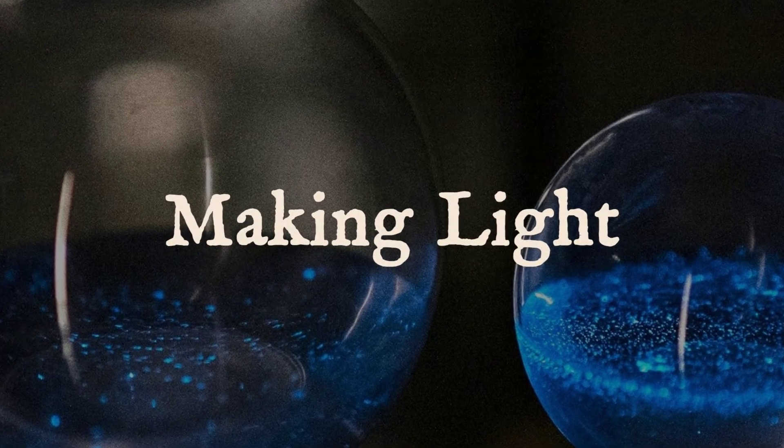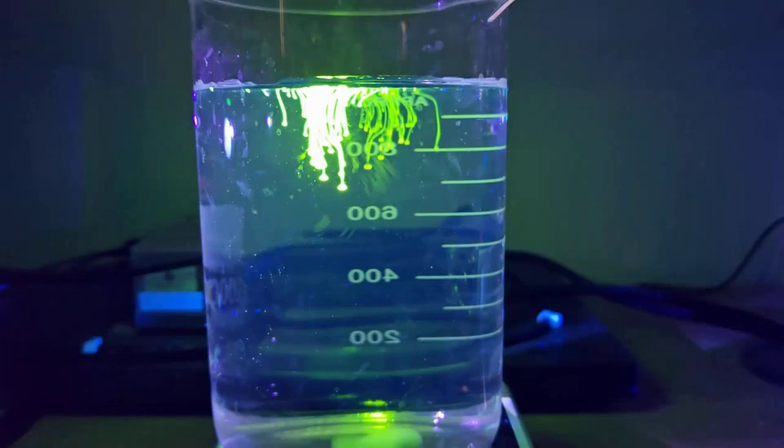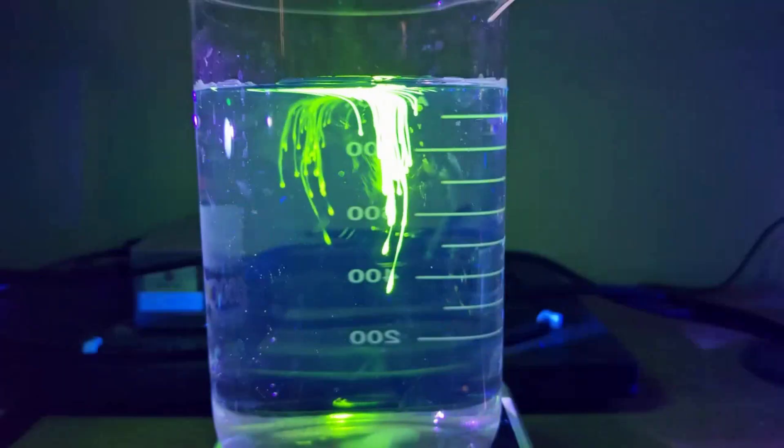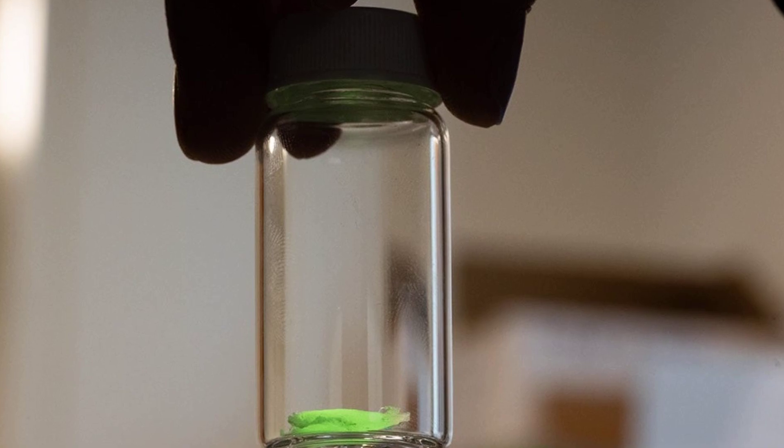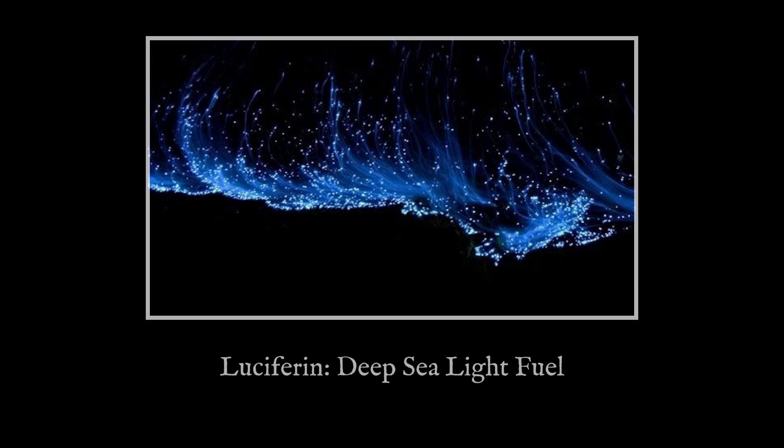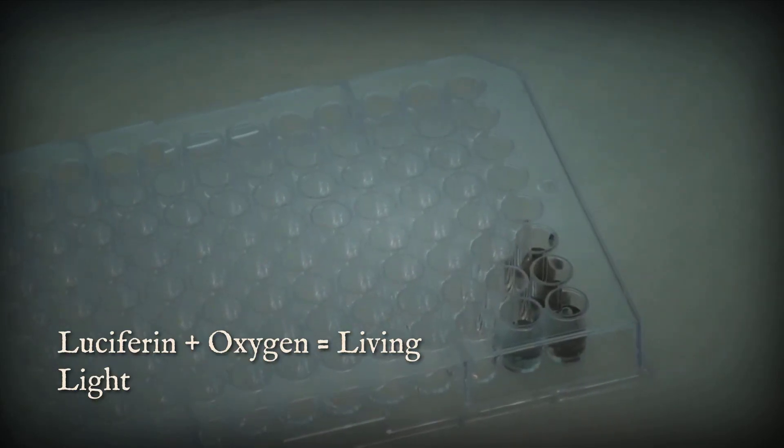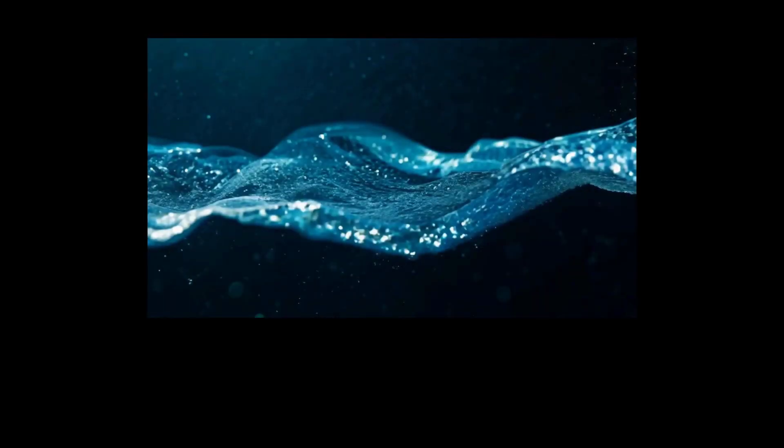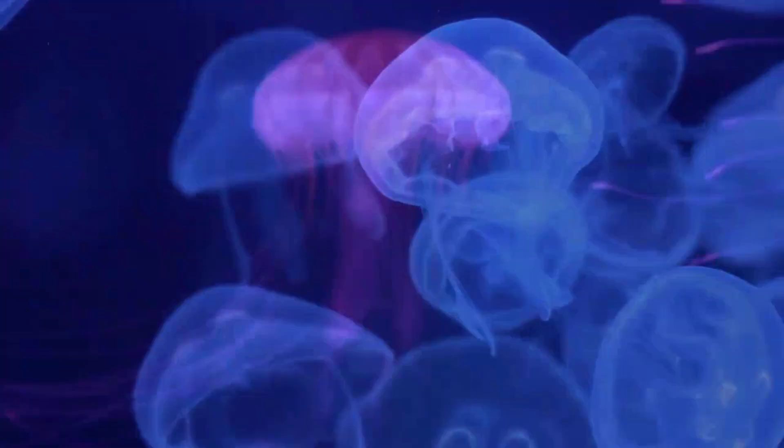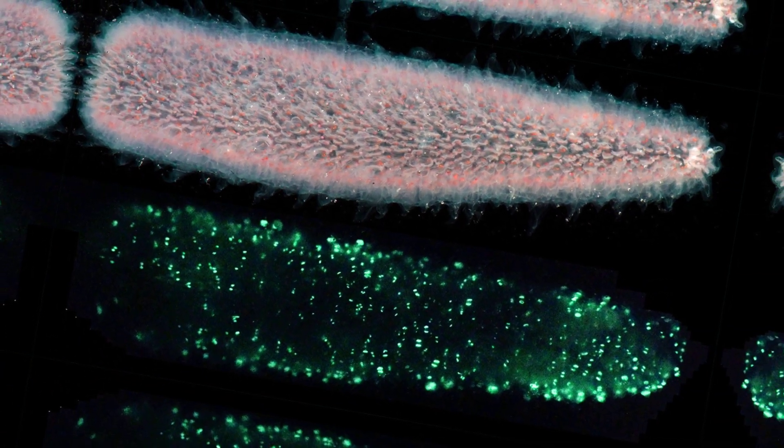Inside a darkened laboratory, a vial of seawater sits beneath a glass dome. Gloved hands inject a clear solution and a faint blue glow spreads instantly through the liquid. This is the heart of bioluminescence—a chemical reaction that turns darkness into signal. The key players are luciferin, a small organic molecule, and luciferase, a specialized enzyme. When luciferin meets oxygen in the presence of luciferase, the reaction drives luciferin into an excited state. As it relaxes, it releases a photon, a particle of light. The result is visible energy from a process invisible to the naked eye.